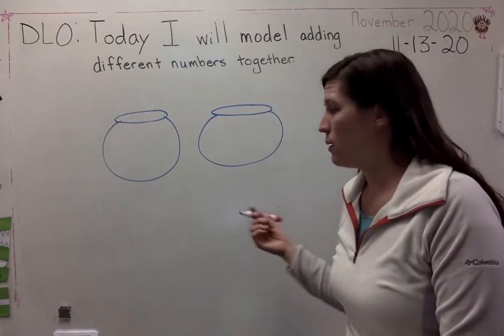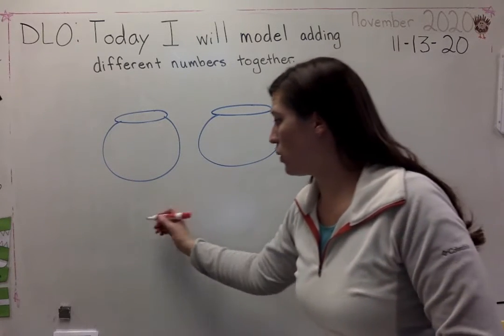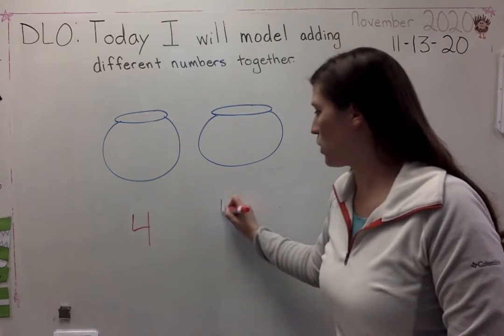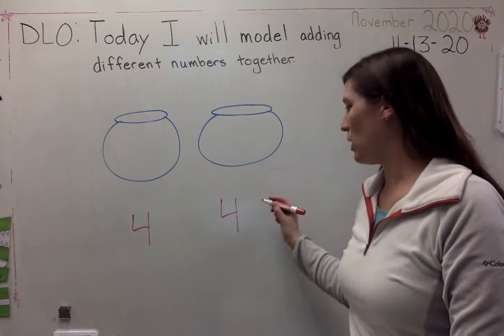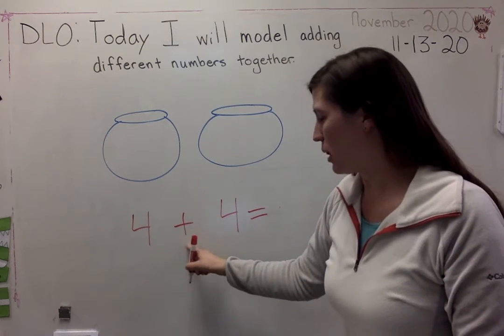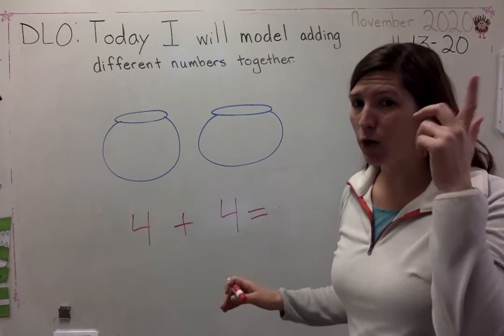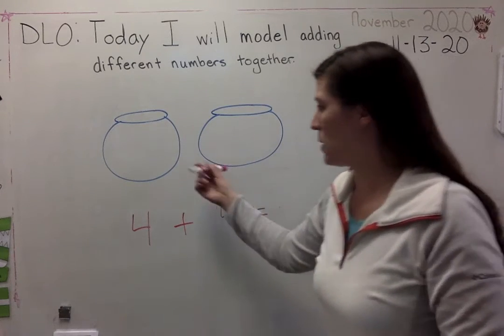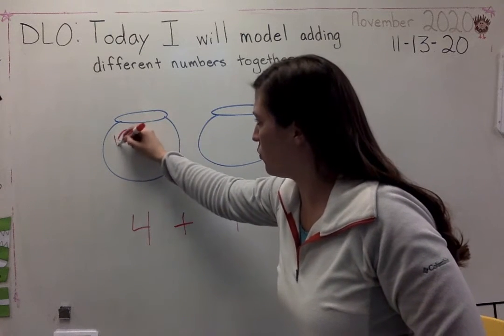So let's model it. Maybe I'll write an equation first. So I had four fish. My sister brought four more fish. How many do we have all together? When I hear the word all, I know the operation is plus. So I wrote my equation first to model what I heard. Now I can draw my picture to help me solve it.